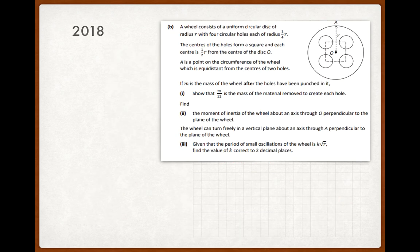Okay, 2018. We have a wheel that consists of a uniform circular disk of radius r with four circular holes, each of radius ¼r. The center of the holes form a square, and each center is ½r from the center of the disk O. A is a point on the circumference of the wheel which is equidistant from the center of the top two holes. If m is the mass of the wheel after the holes have been punched in it, show that m/12 is the mass of the material removed to create each hole.